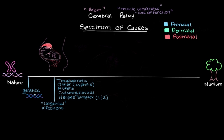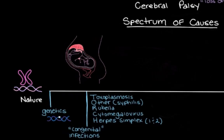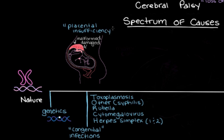Another thing that can go wrong in the prenatal period involves the placenta and umbilical cord, which allow the fetus to receive oxygen and nutrient-rich blood from mom. Sometimes the placenta doesn't form properly or becomes damaged during gestation, so it can't deliver oxygen and important nutrients to the fetus. We call this placental insufficiency, and it is another possible cause of cerebral palsy.